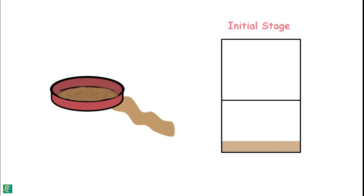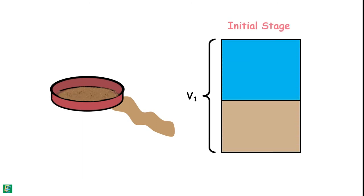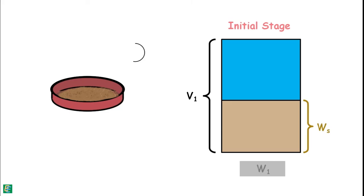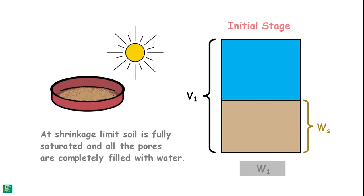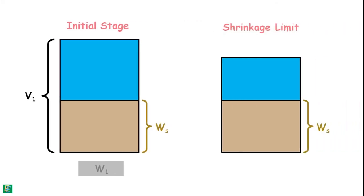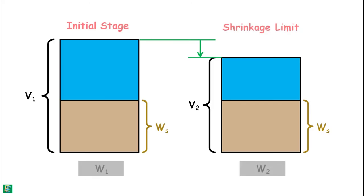We can represent this flowing state of the soil sample using a phase diagram. V1 is the total volume of the soil and W1 is the weight of the sample. The weight of solids is represented as Ws. If the soil is allowed to dry gradually up to its shrinkage limit — where the soil is fully saturated and all pores are filled with water — the volume reduces to V2 from the initial V1, and weight reduces to W2 from W1.